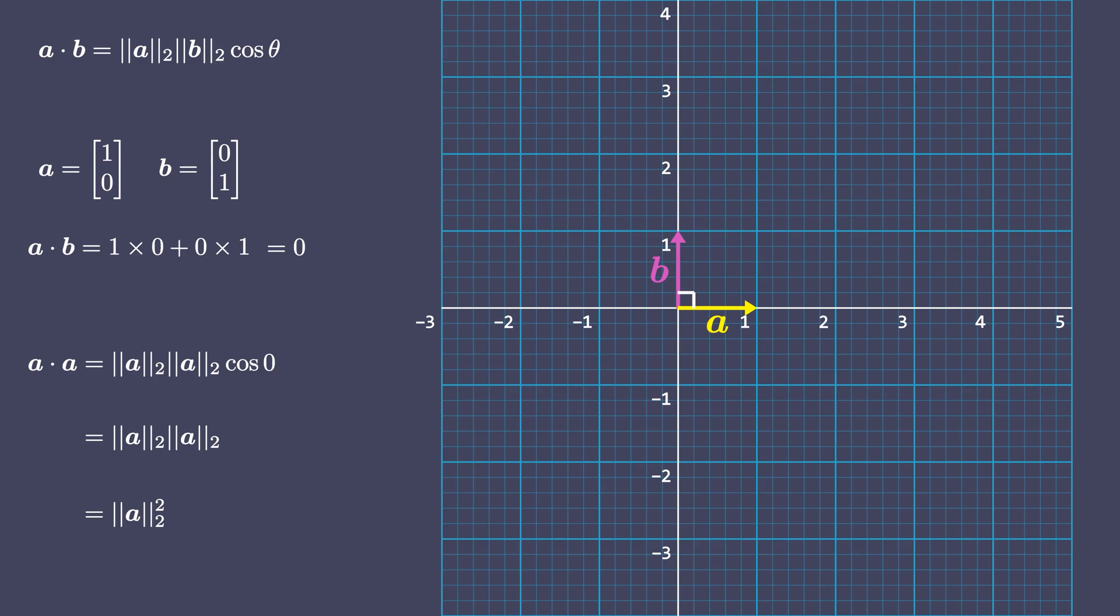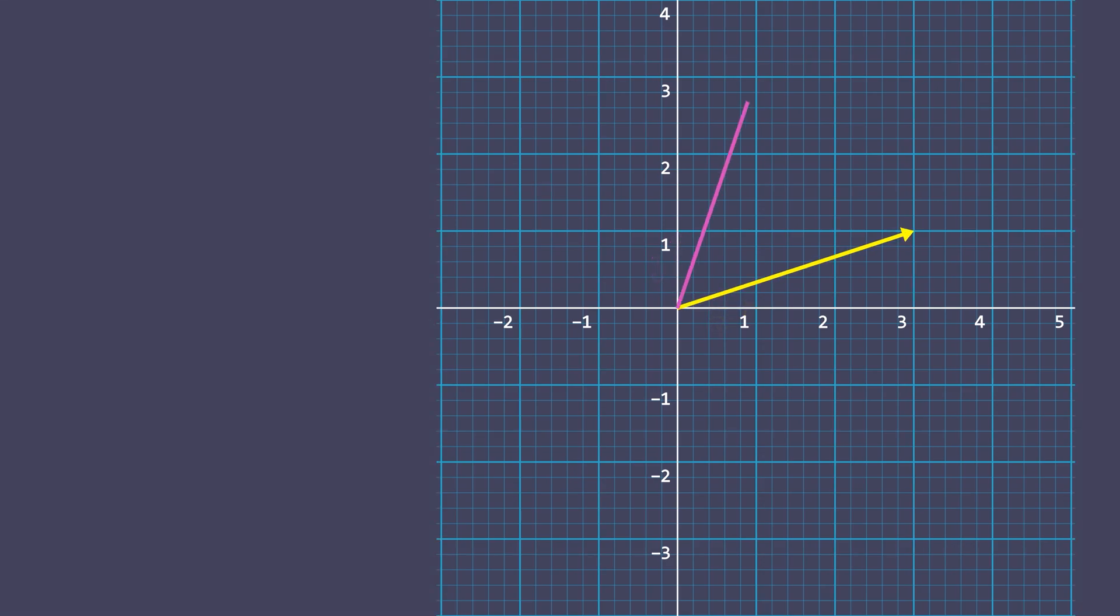You will see this alternative way of arriving at vector magnitude in a number of places in machine learning literature. Let's see a few more examples to understand how the angle between two vectors relates to their dot products.